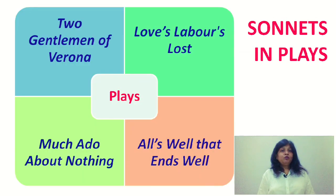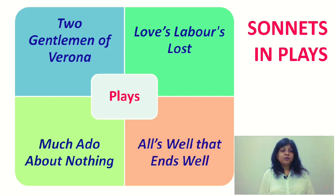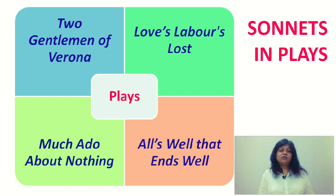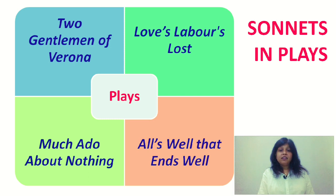There are a few sonnets which are found in his plays as well. These are different kinds of sonnets — satirical in tone or written for narrative purposes. These are not the love sonnets found in the main collection of 154. They appear in Two Gentlemen of Verona, Much Ado About Nothing, Love's Labour's Lost, and All's Well That Ends Well.